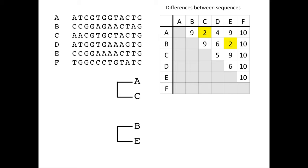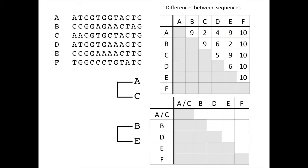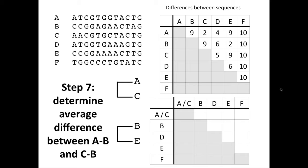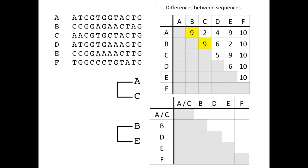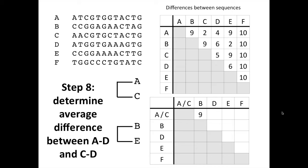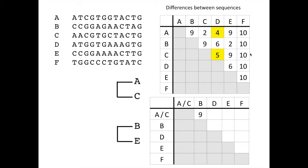With the first two groupings made on our tree, we now need to rework our table, with the grouped sequences combined together as a grouping rather than two individual entries in the table. We will start by combining A and C, taking the average difference that A and C show to each of the other sequences. There are nine differences between A and B and nine differences between C and B, so the average difference of A and C to B is nine. Moving to D, there are four differences between A and D and five differences between C and D, so the average difference of A and C to D is 4.5.